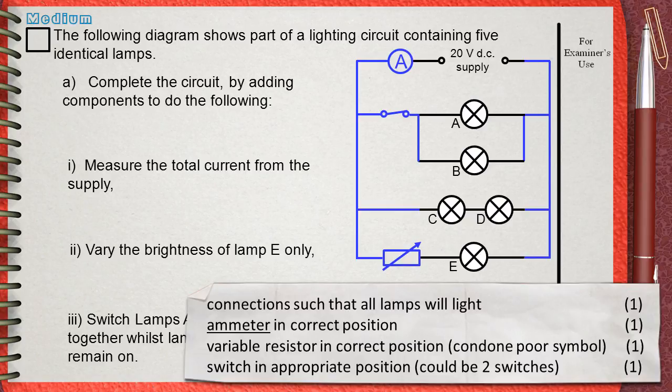The fourth mark is for switch in appropriate position. Could be two switches. As you can see, we added the switch in the correct position to control A and B. The mark scheme also accepted if you add one switch for A and one switch for B.